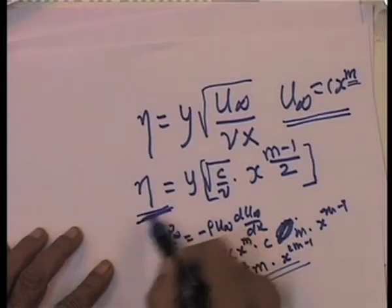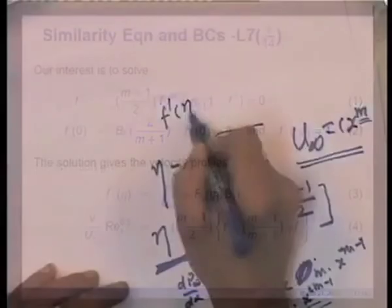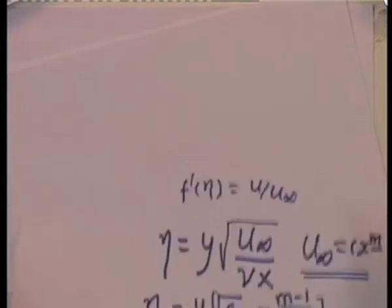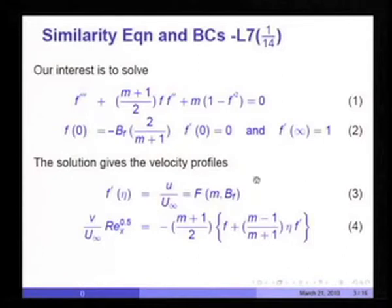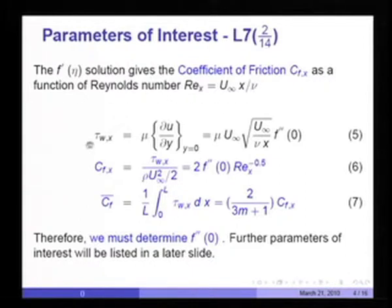The similarity independent variable is η and f'(η) = u/u∞. We want to solve this third order ordinary differential equation, so we essentially split it up into three first order differential equations. Before I do that, let me note that the f'(η) solution gives the coefficient of friction as a function of the Reynolds number.